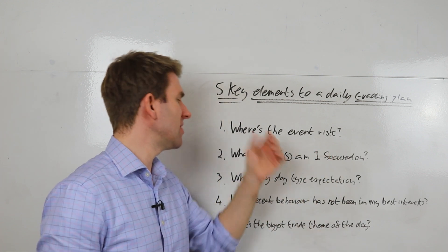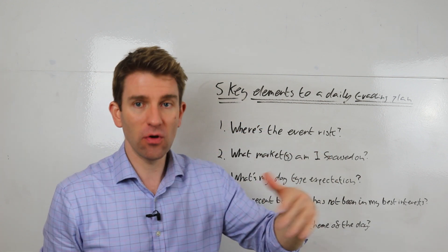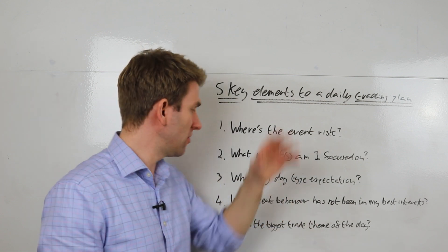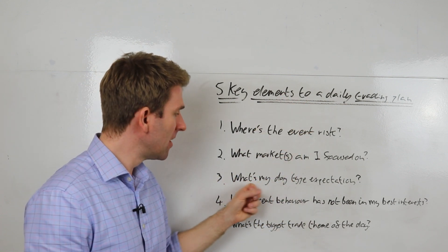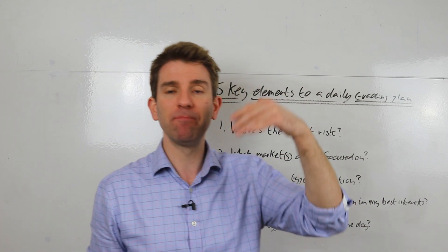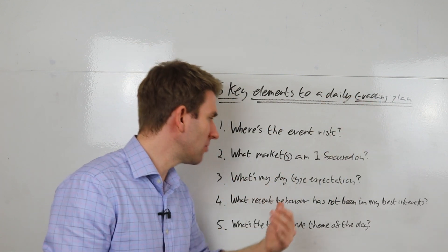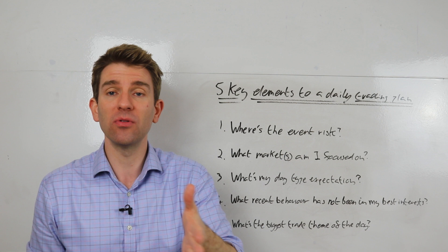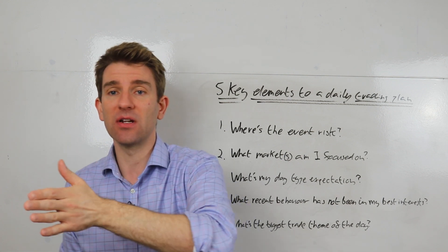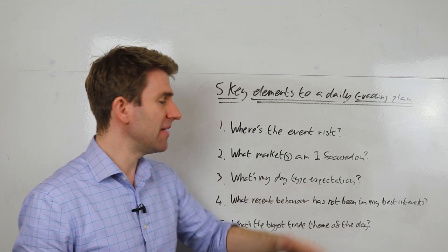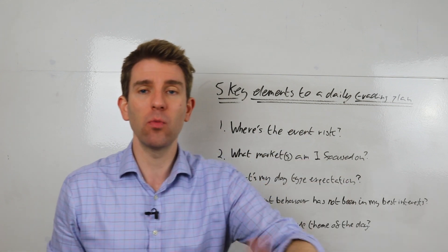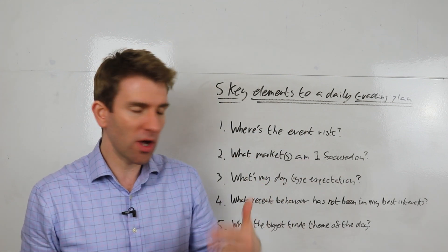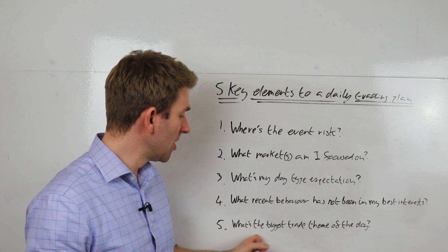So those are five things, guys, the event risk, keeping the risk managed, markets you're focused on why and when you'll pivot to another market. If you're a day trader, this is for day traders only. What's my day type expectation, i.e., trend, range bound, quiet, maybe active in the morning, then go quiet, is going to go quiet for the whole day because we've got some data coming out and it's going to be active in the afternoon, whatever. Recent behavior, again, that's a personal kind of thing of, okay, what do I need to improve on in my trading, what I'm working on specifically.